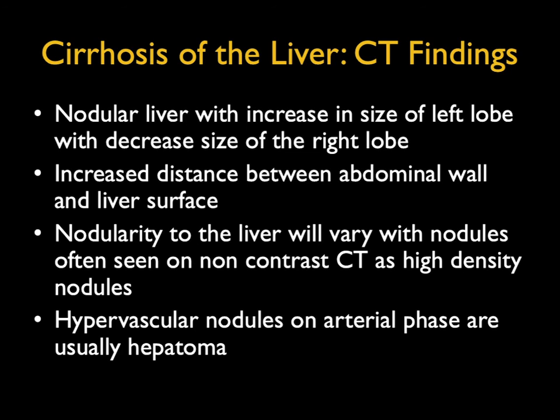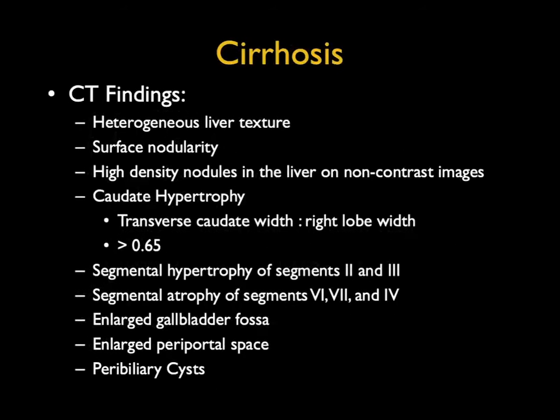In terms of CT findings in cirrhosis: nodular liver with increased size of the left lobe and decreased right lobe, increased distance between the abdominal wall and the liver surface, nodularity with nodules often seen on non-contrast scans as high-attenuation densities, and hypervascular nodules on arterial phase — though those are usually hepatomas. Additional findings include heterogeneous liver texture, surface nodularity particularly by the left lobe, enlarged caudate lobe, segmental hypertrophy of segments 2 and 3, atrophy of segments 6 and 7 and 4, enlarged gallbladder fossa, enlarged periportal space, and peribiliary cysts.